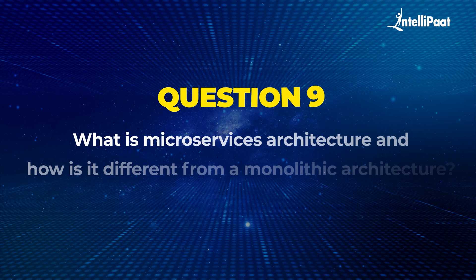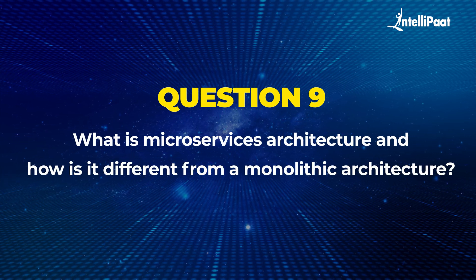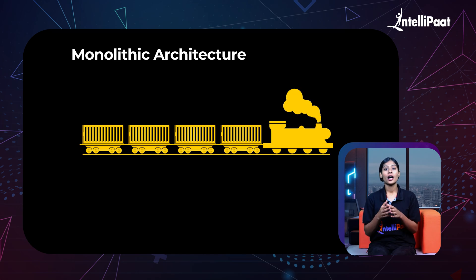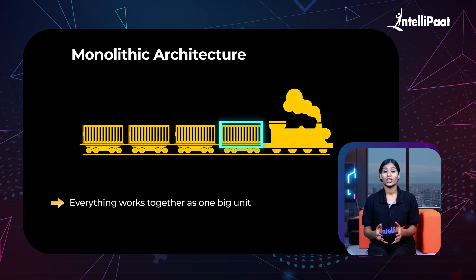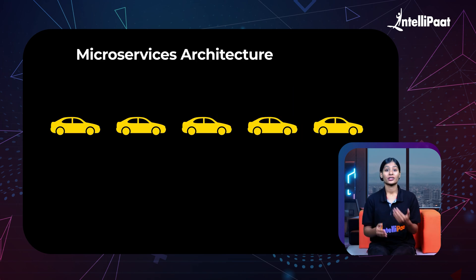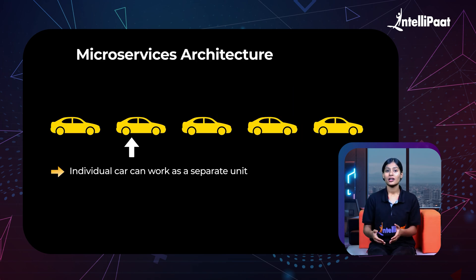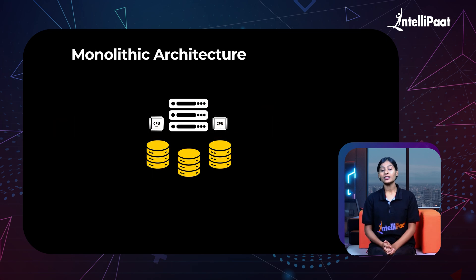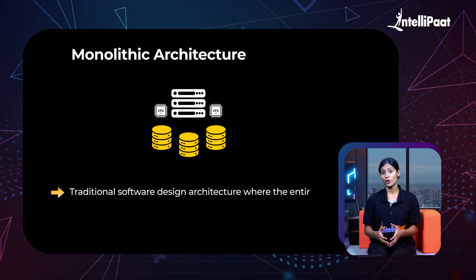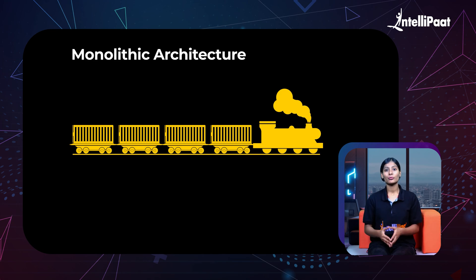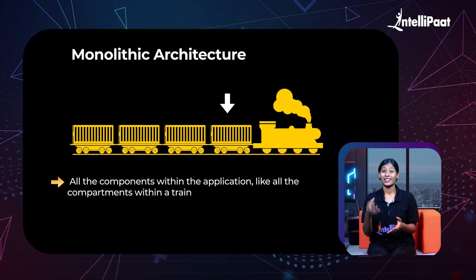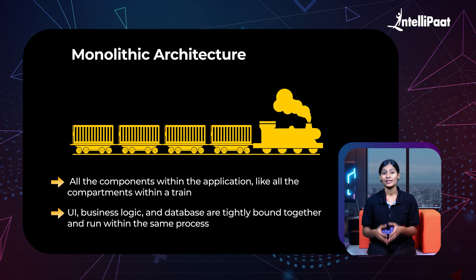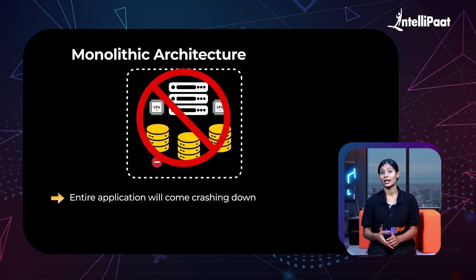Moving on to our next question: what is microservices architecture and how is it different from monolithic architecture? In simple terms, a monolithic application is like a single train where everything works together as one big unit. In technical terms, a monolithic architecture is a traditional software design where the entire application is built as a single unified unit. All components — like the UI, business logic, and database — are tightly bound together and run within the same process. So if one part fails, the entire application comes crashing down.